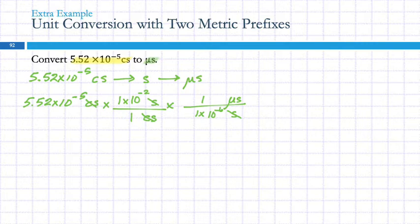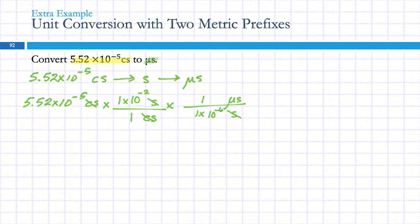These conversion factors are exact, so the answer will also have three sig figs. Make sure your calculator gives you the right answer on this one — using the wrong way of entering scientific notation could give an answer off by a factor of 10¹².